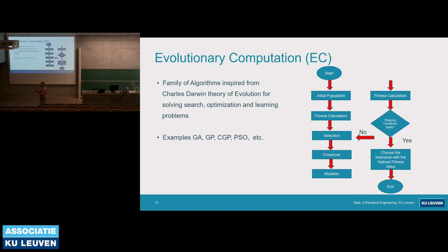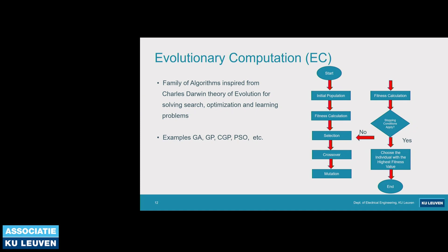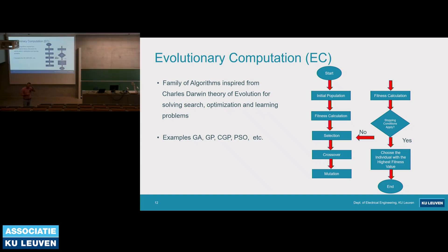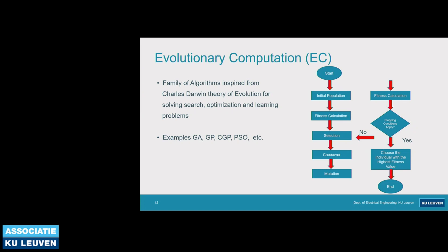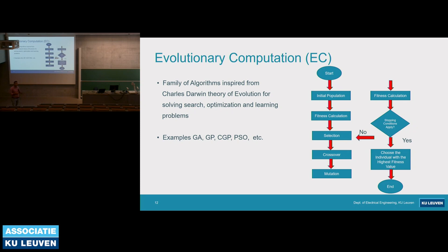The stopping conditions are: either you achieve your goal with a perfect fitness value, or the number of generations is completed. One disadvantage of evolutionary computation is that it requires a tremendous amount of computing resources. In the end, you have a set of solutions — not only one, but more than one — which are equally good. This is a very advantageous situation compared to conventional algorithms where you have only one solution.